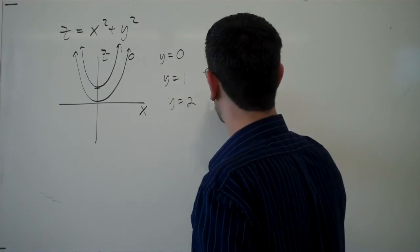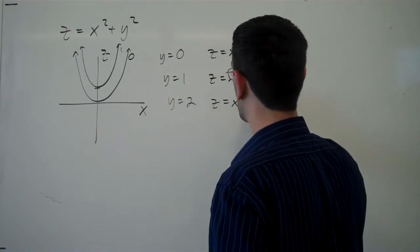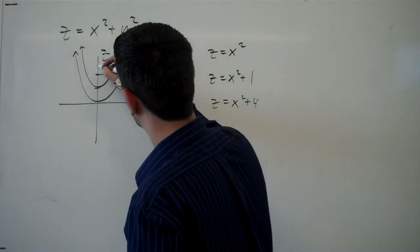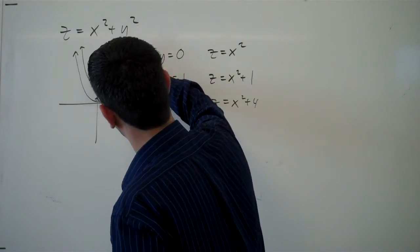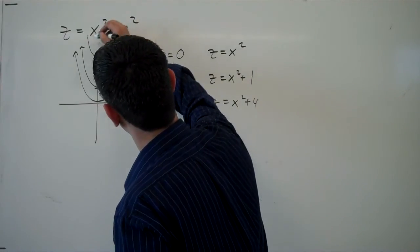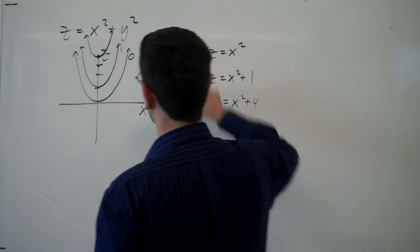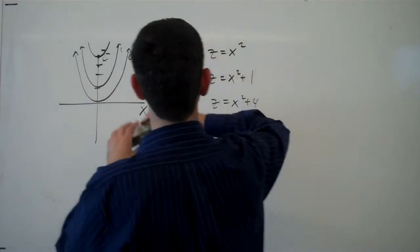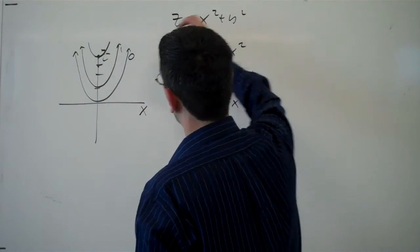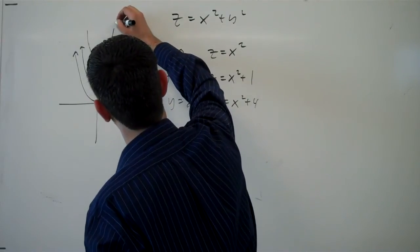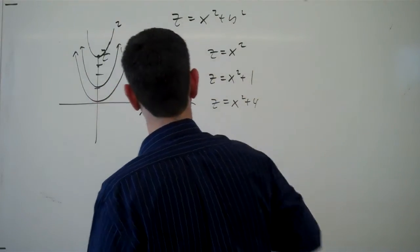If y is 2, we'd get z equals x squared plus 4, which is up here. And we're getting this shape. I'm going to erase my equation here so we have more room. That's z equals x squared plus y squared. And we're getting a curve up here when y is 2.